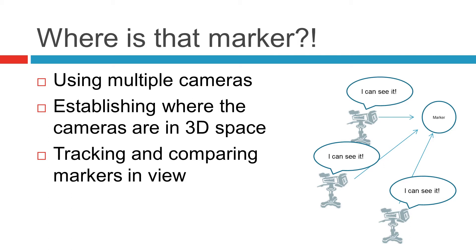This is done by calibrating the cameras using a known geometric shape, visible by all cameras. The software then compares the image from every camera, measuring perspective in order to recognize where they are. When the actual capture occurs, the same technique is used to acquire the position of a marker. As long as the marker is visible by the majority of the cameras, the software is able to track and extract its position.